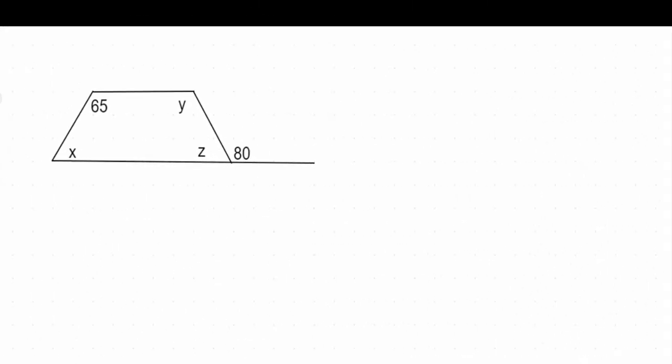This video is going to focus on how to find the missing angles when you're given a few lines, maybe a shape or something like that involved. We're going to use different relationships that we know about angles in order to fill in the missing pieces. The kind of situation we're dealing with is when two parallel lines are cut by a line which is called a transversal.